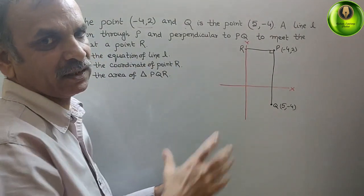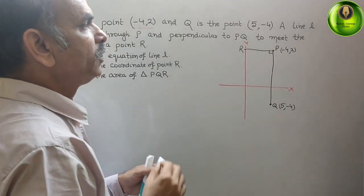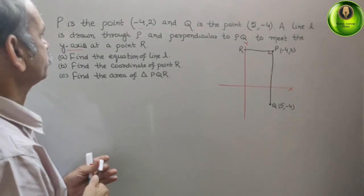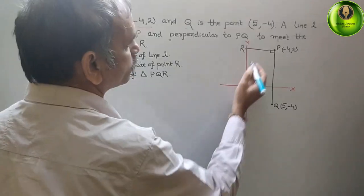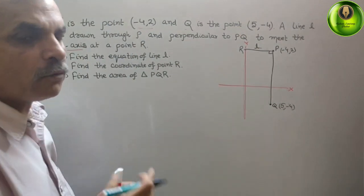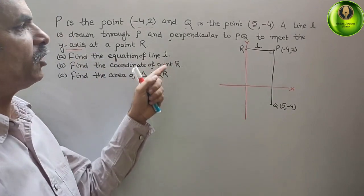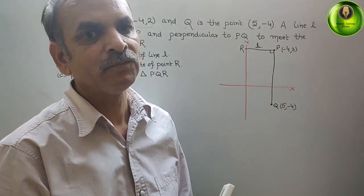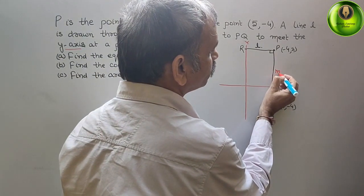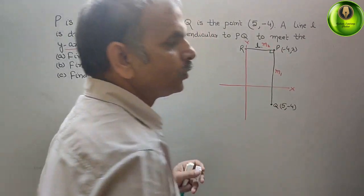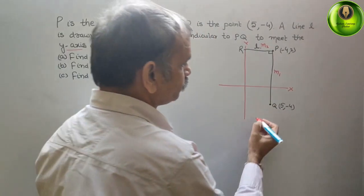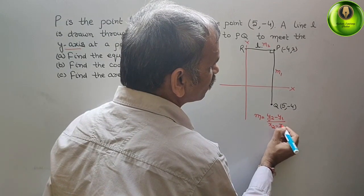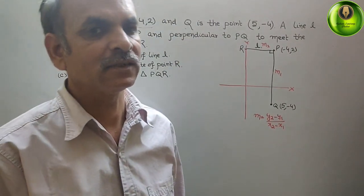Now your question will start. What they have told: find the equation of the line L. This is your line L. What we have to do? Since L is perpendicular to PQ, first we will find out the gradient. Suppose the gradient of PQ is M1 and of L is M2. The gradient formula is M = (Y2 - Y1) / (X2 - X1).